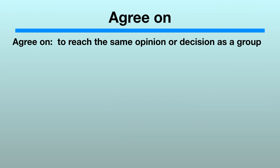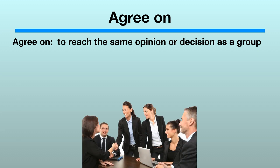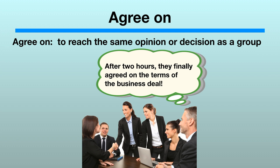Next, we have Agree On. Agree On means to reach the same opinion or decision as a group. The team is finishing up a meeting, wrapping up a long discussion and coming up with a decision that makes everybody happy. The man on the right is particularly happy that the meeting is finally over. He thinks: after two hours, they finally agree on the terms of the business deal.